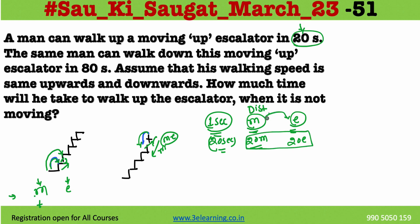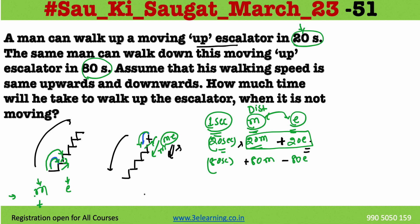Start with M and E. In 20 seconds going up, escalator supports man, so total work is 20M plus 20E. In 80 seconds going down, the man is moving down and escalator is moving up, so escalator opposes the man — it becomes 80M minus 80E. Both equations equal the same distance, because we are travelling from A to B and B to A — the work done is the same, only the pattern is different.